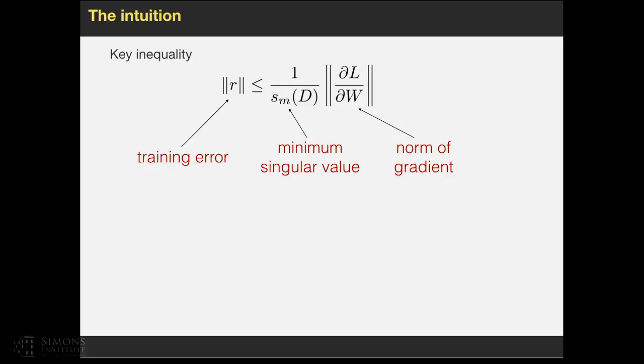This is the intuition: this key inequality, where the norm of R is upper bounded by the norm of the gradient and also related to the inverse of the minimum singular value of D. That is, if you have small gradient norm and we have a lower bound on the smallest singular value of D, then the training error is upper bounded. And gradient descent will minimize this gradient norm.